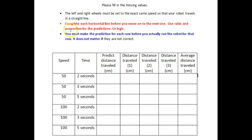You will see that the instructions say complete each horizontal line before you move on to the next one. This is very important. Let us look at the first horizontal line. You are going to program your robot to move forward at a speed of 50 for two seconds.